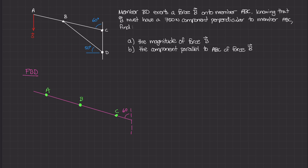Now let's draw force B, which acts along the line of member BD. Going back to the free body diagram, I can depict that force acting at some angle alpha with respect to the ABC line. We need to figure out what that angle alpha is.